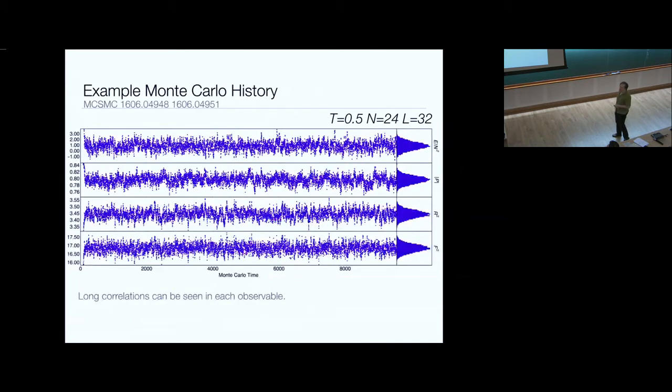So what did we do? We did a large Monte Carlo calculation, where for many different values of temperature, n, and number of lattice sites, we did a lengthy Monte Carlo calculation, making sure that all of our observables look nice and beautiful and Gaussian. You can see here in each one of these observables, long autocorrelations. This is thousands of Monte Carlo steps. You can see hundreds of measurements that all fluctuate together. It's really important to have a long Monte Carlo ensemble.